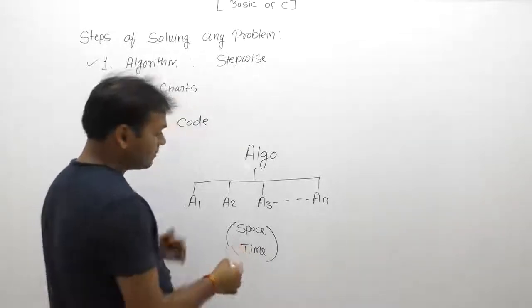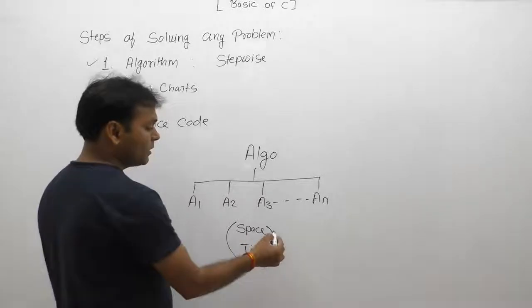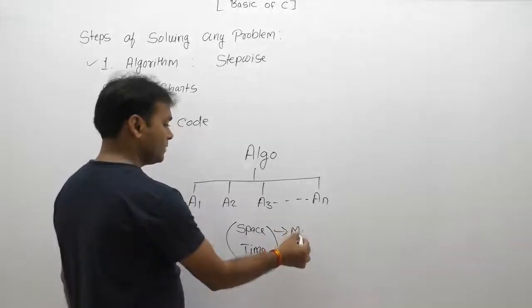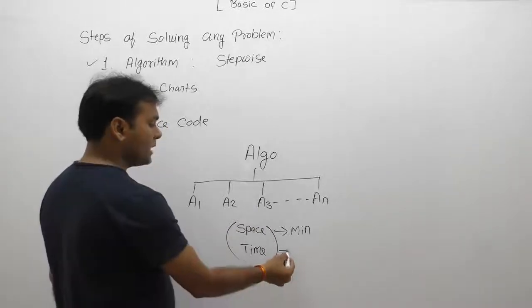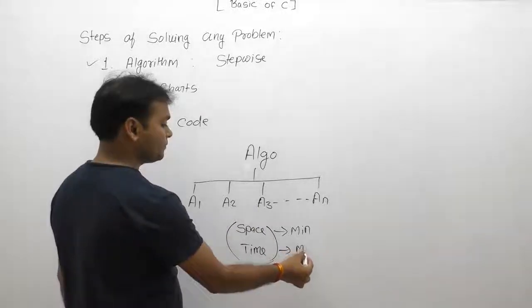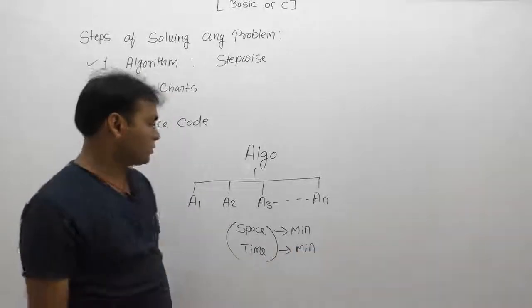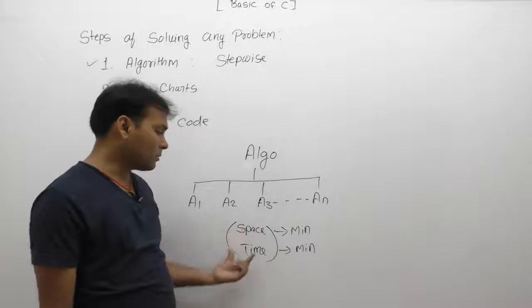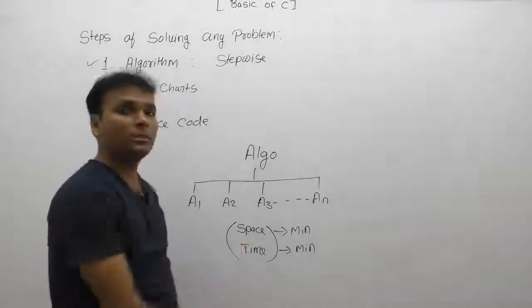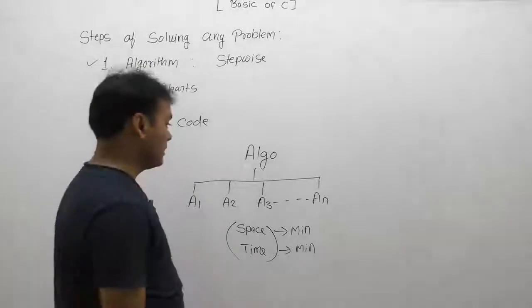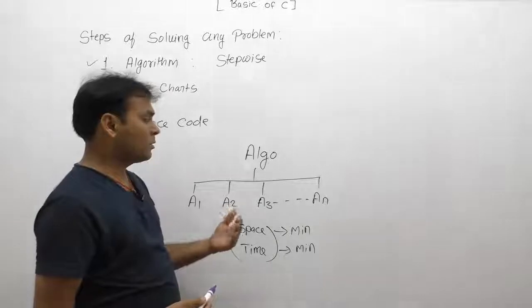Of course, multiple solutions are available. Which one is the best solution depends on required minimum space - it must take minimum space or less space, or minimum time. Any problem solution that can be solved in minimum time using minimum space - space means memory space or number of required bytes - then we can say this is the best algorithm for solving any problem.